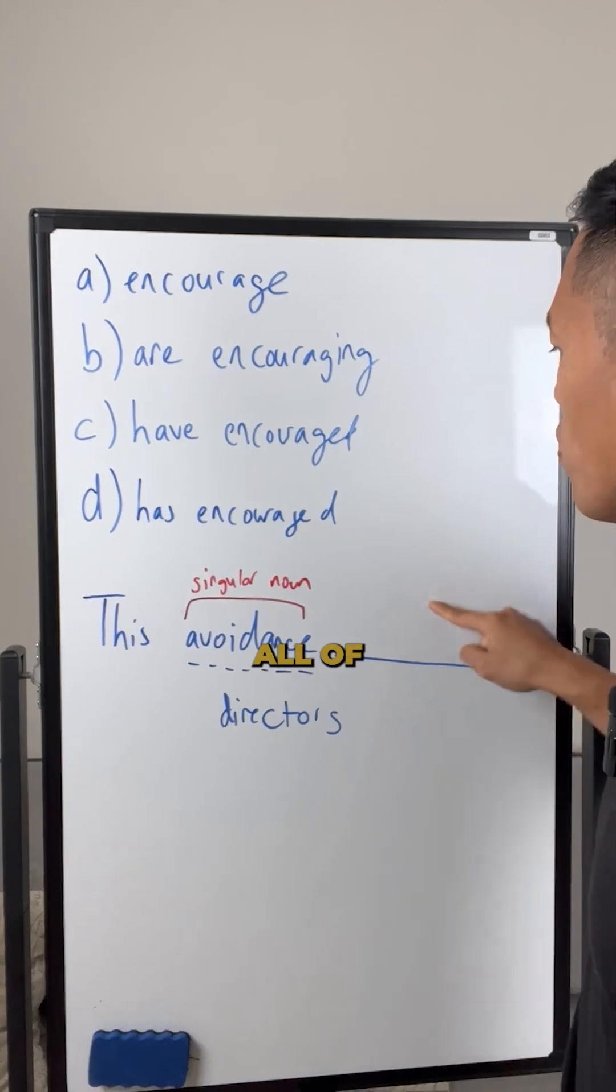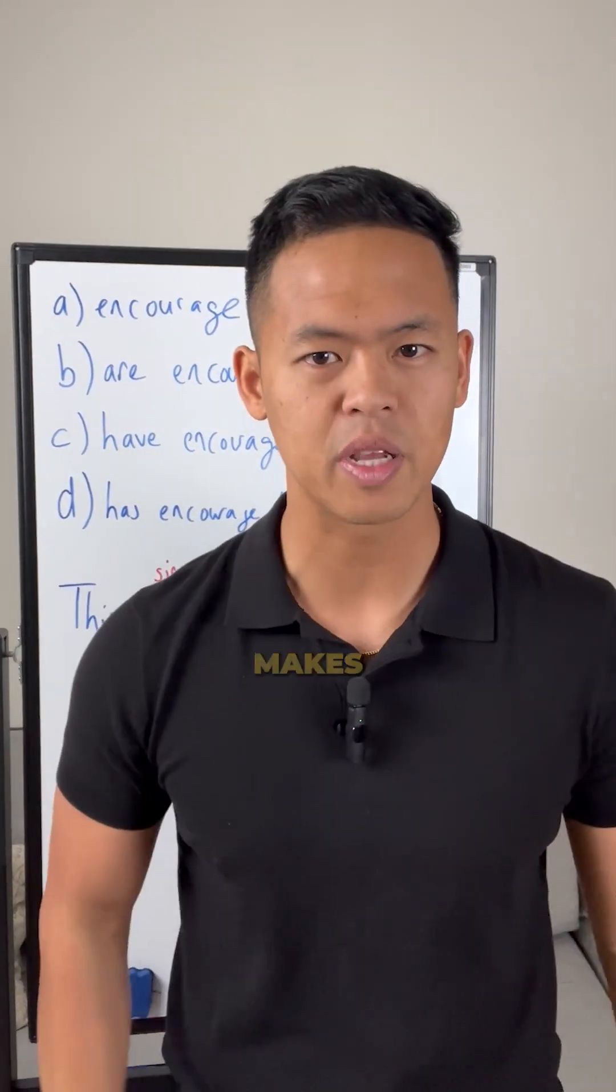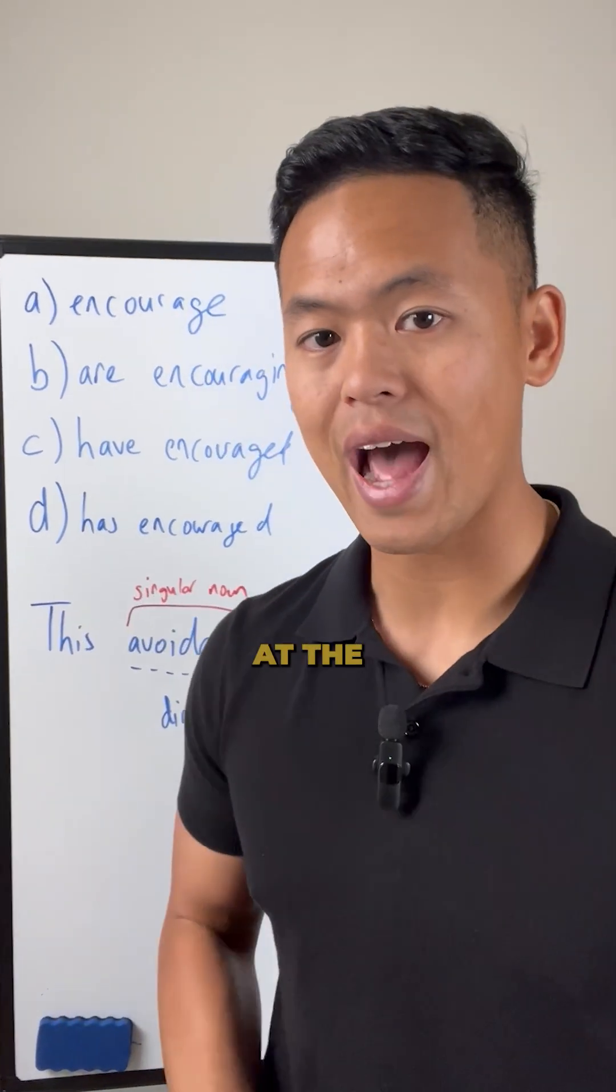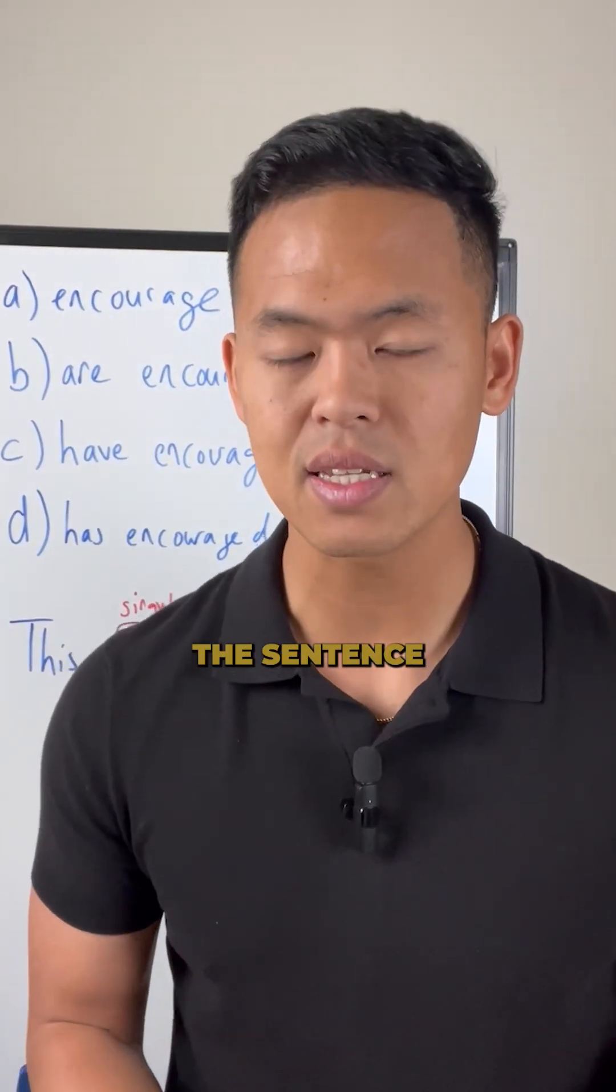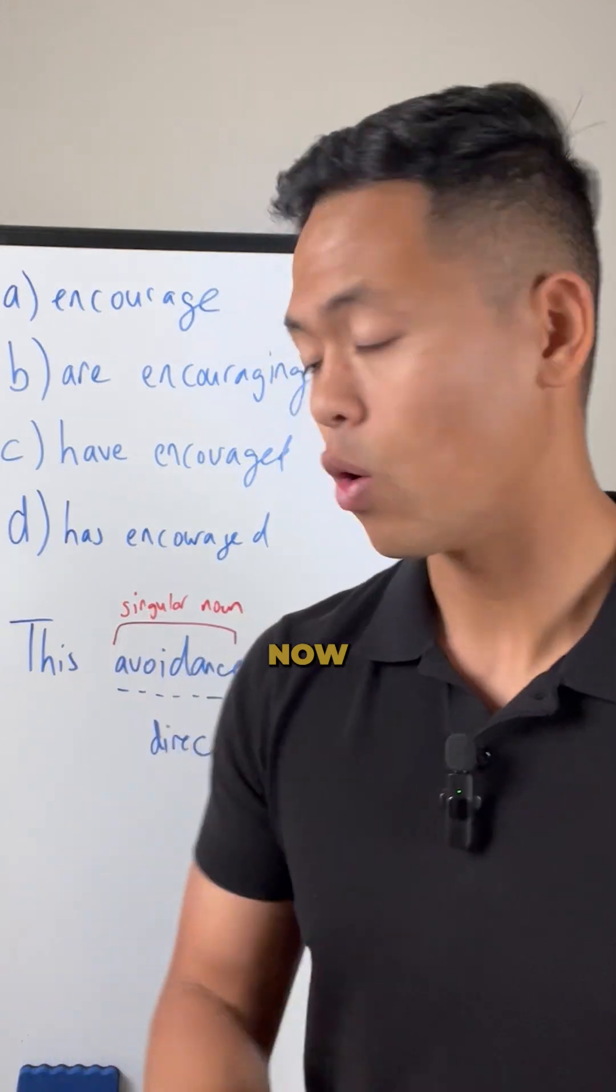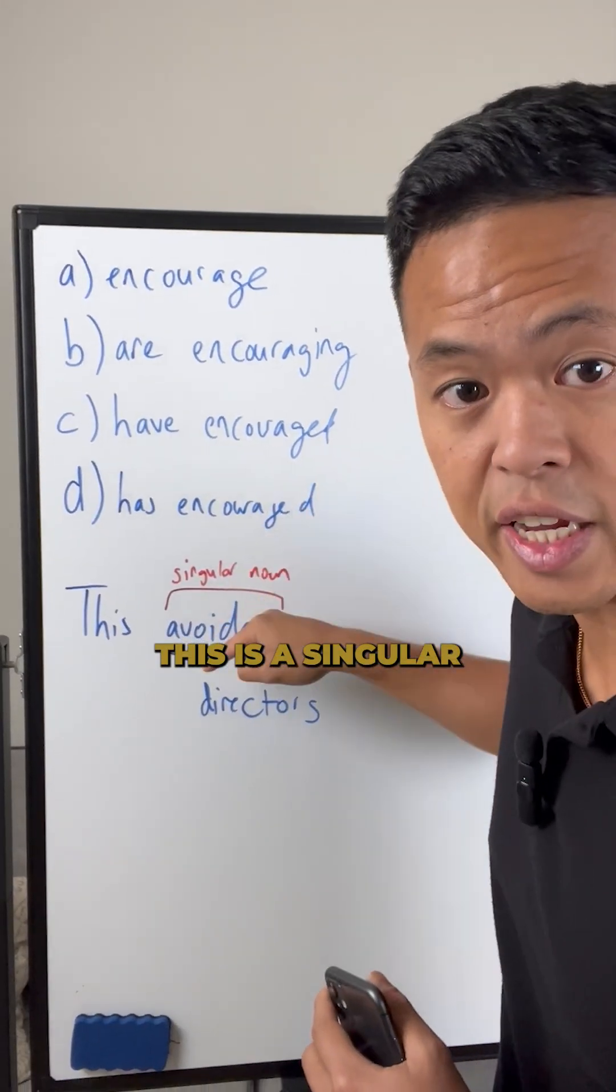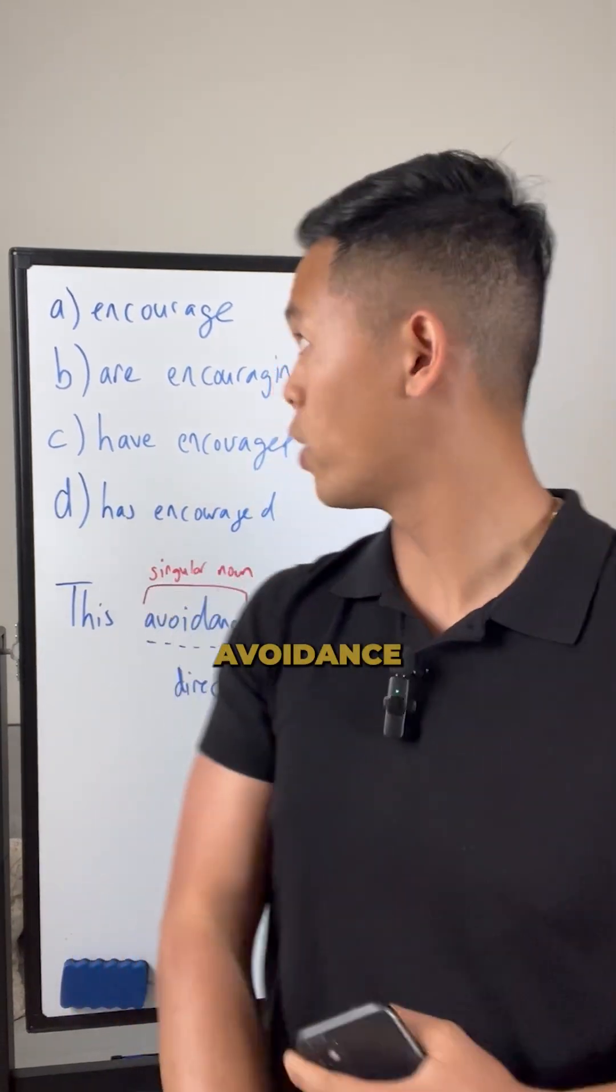Just plug in all these answer choices and see which one makes the most sense. The easiest way to identify this is to take a look at the noun of the sentence. We know that the noun in this case is avoidance. This is a singular noun. There's only one avoidance.